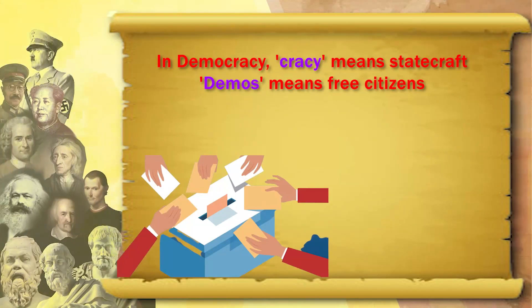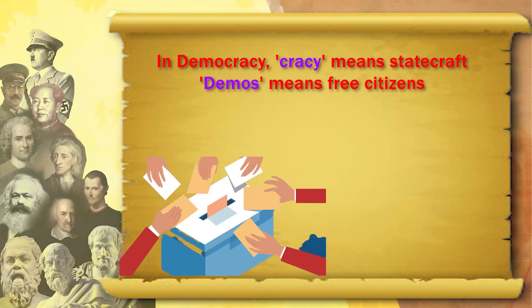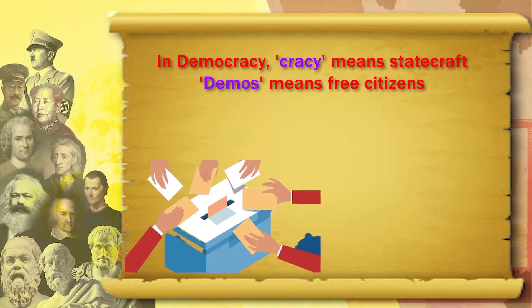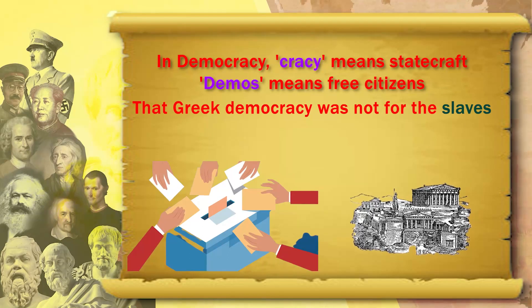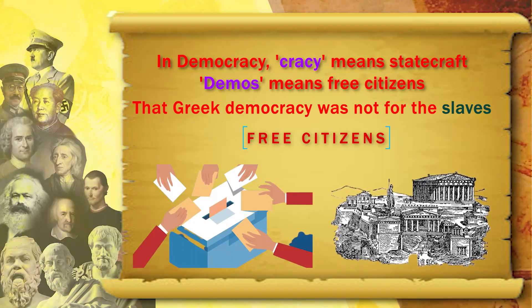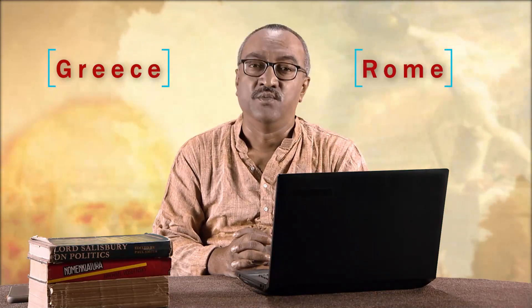Europe is said to be the birthplace of democracy, but we must understand the word. Democracy — 'krasi' means statecraft, power — of the demos. Demos means the free citizen. Greek democracy was not for the slaves; it was only for the free citizens, who were not very many in number. The majority of the economy was run by slaves, and a large percentage of the population was enslaved — in Greece as well as in Rome.